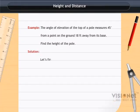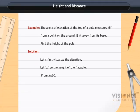Let's visualize the situation. Let X be the height of the flagpole. From triangle ABC, tan 45 degree is equal to X by 18, as tan theta is equal to BC by AB.